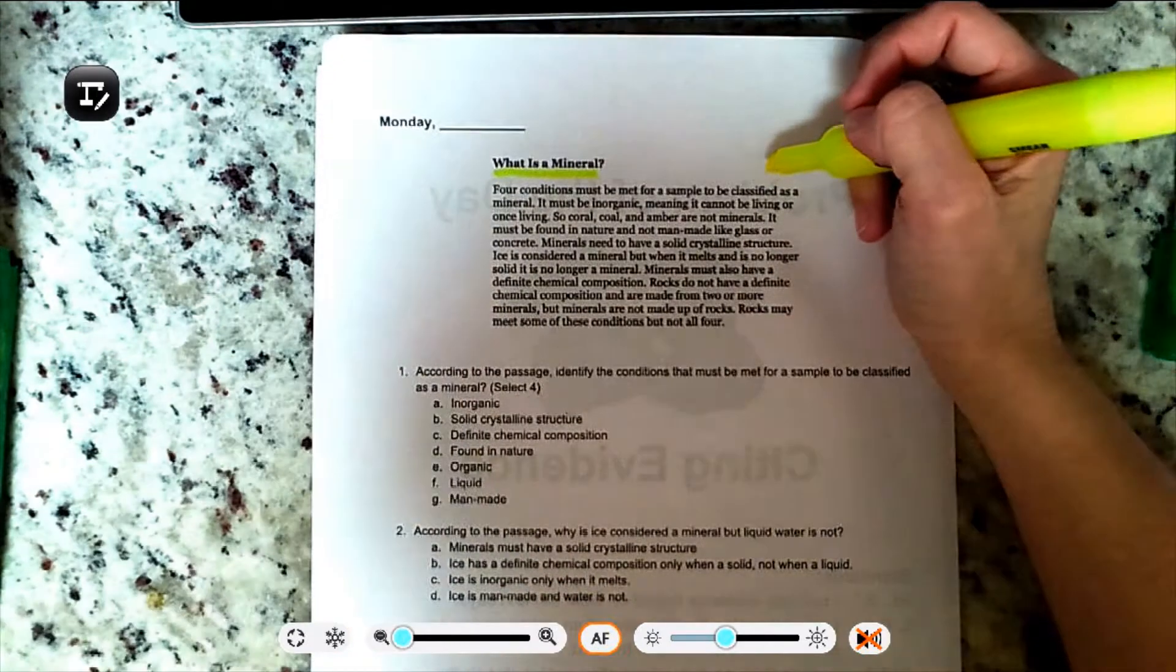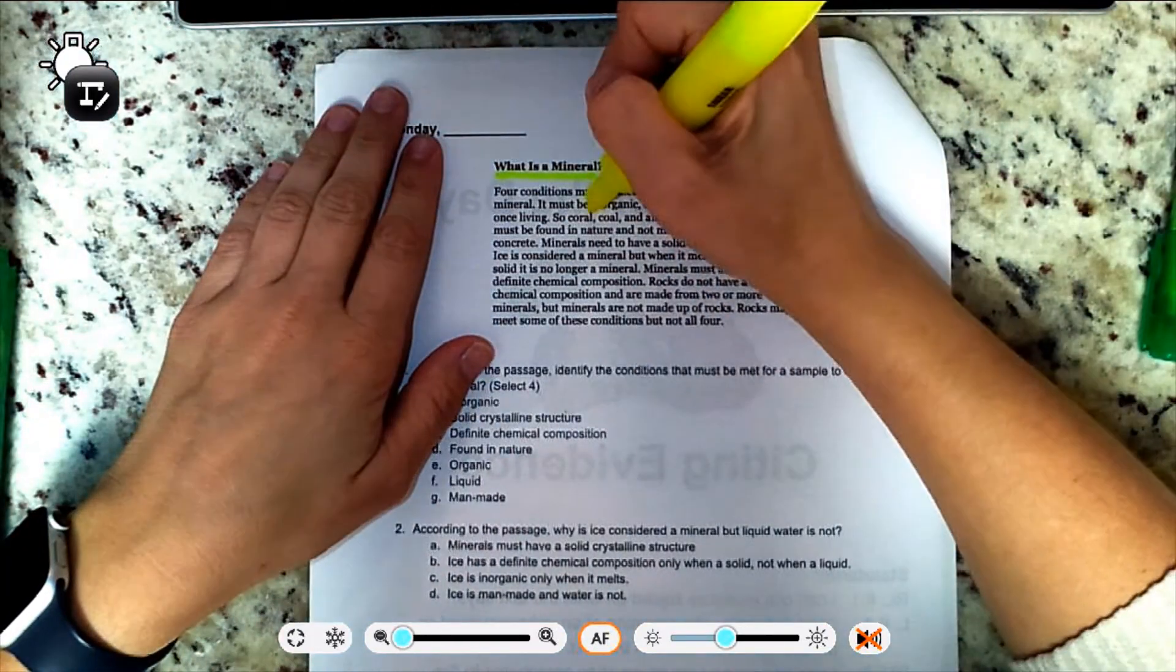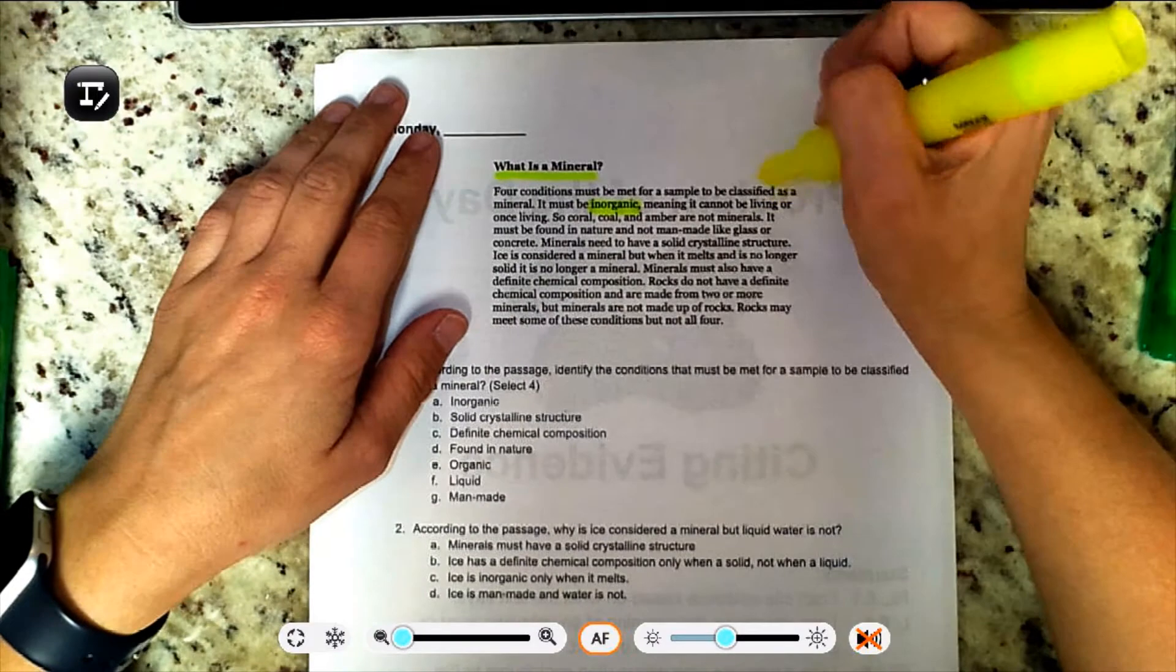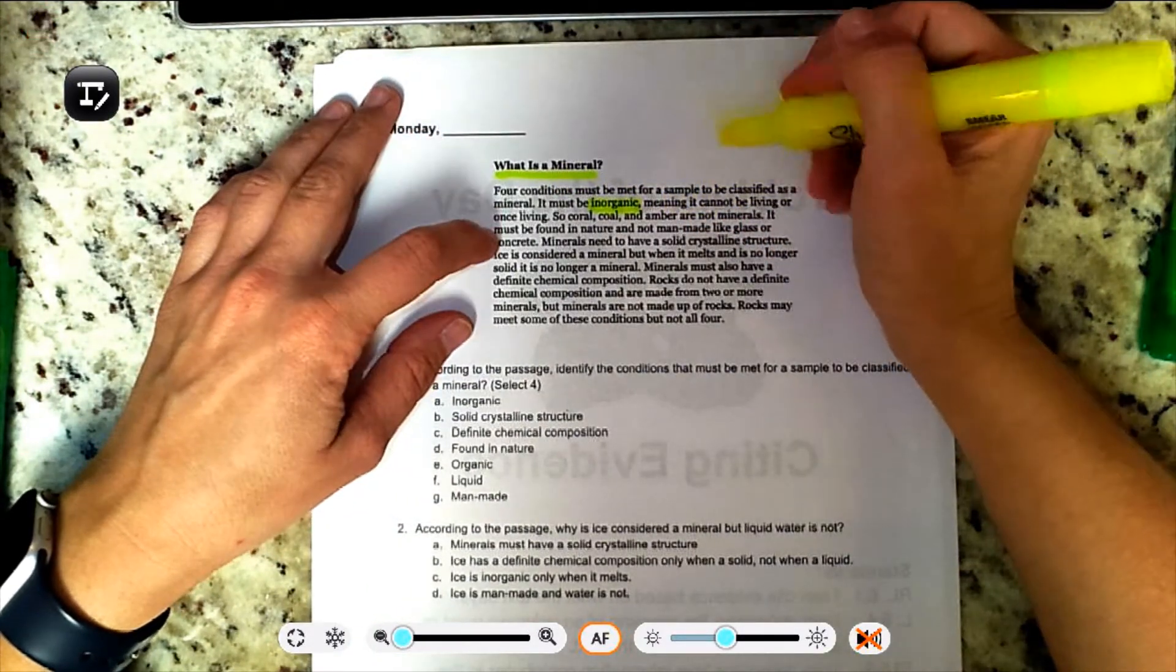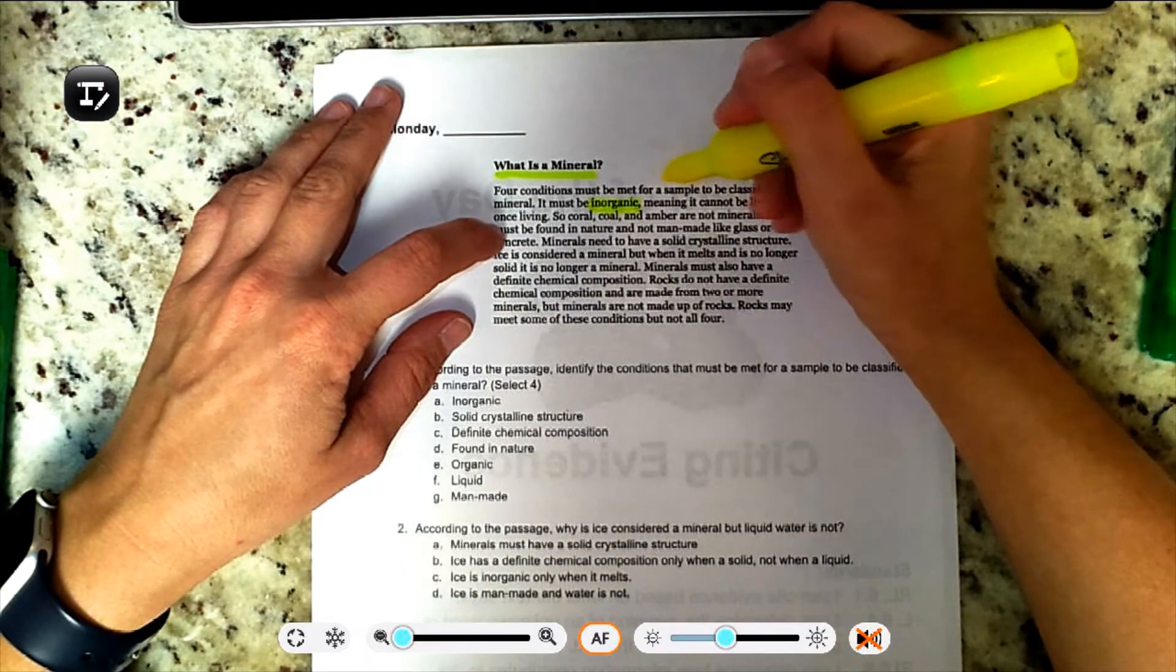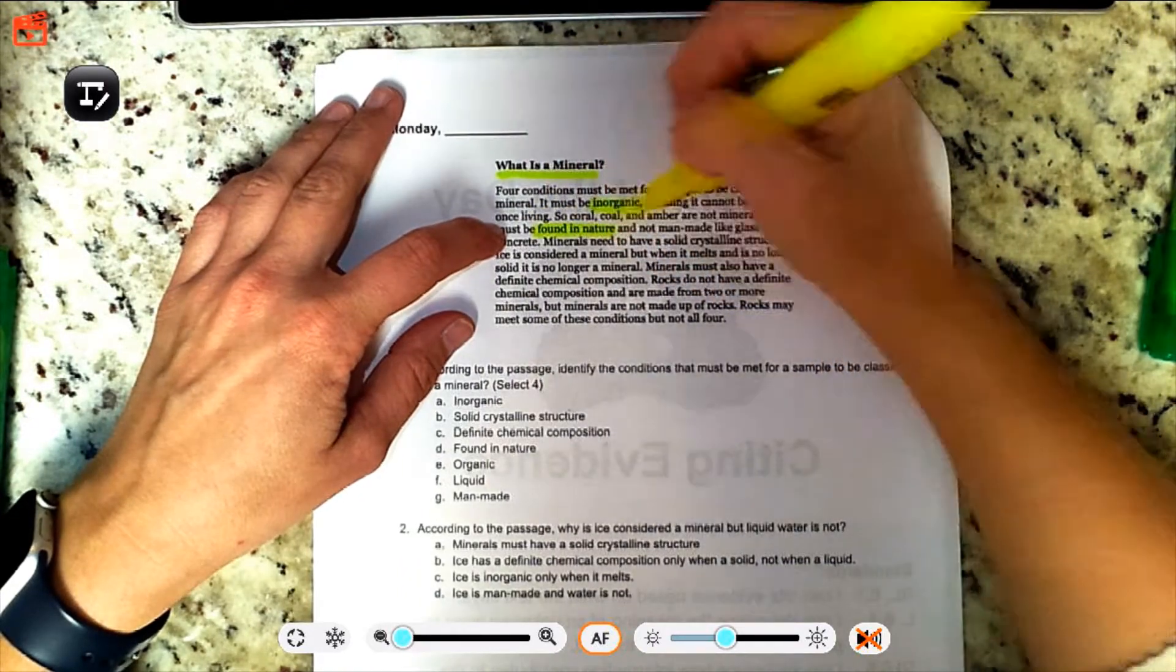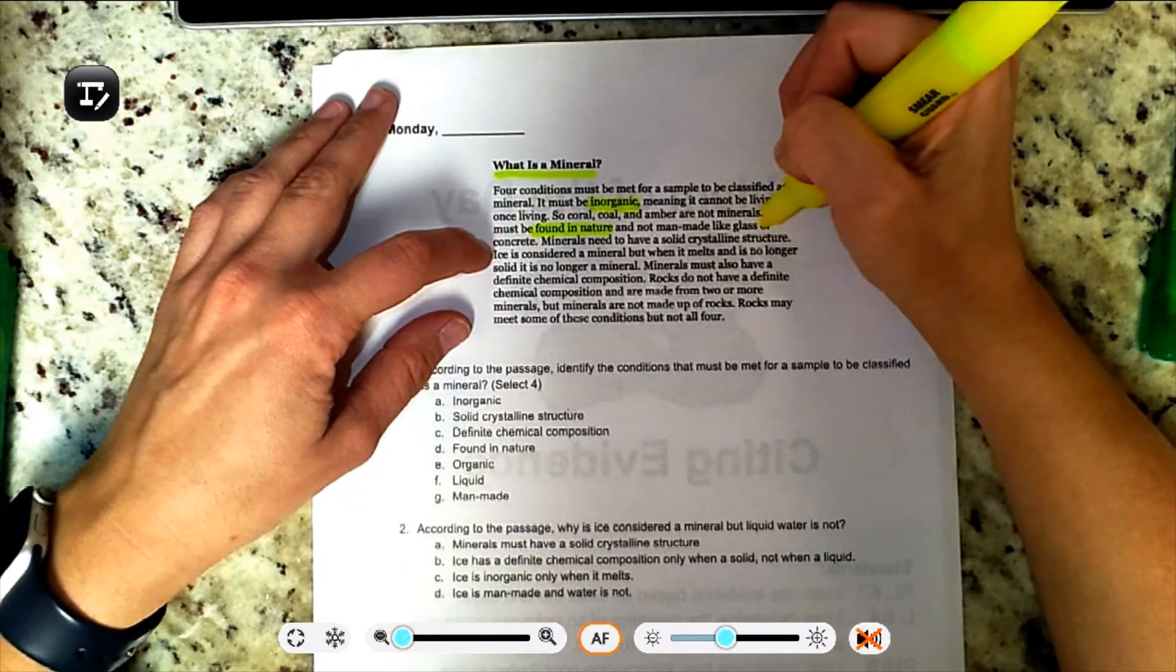It must be inorganic, meaning it cannot be living or once living. So coral, coal, and amber are not minerals. It must be found in nature and not man-made like glass or concrete.